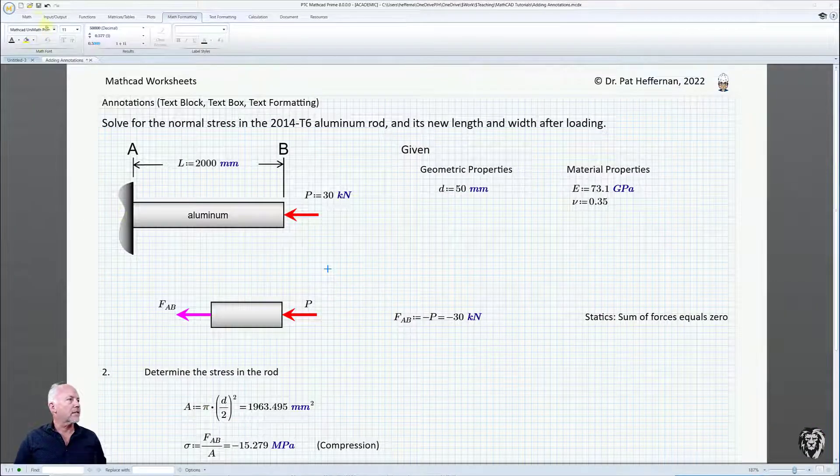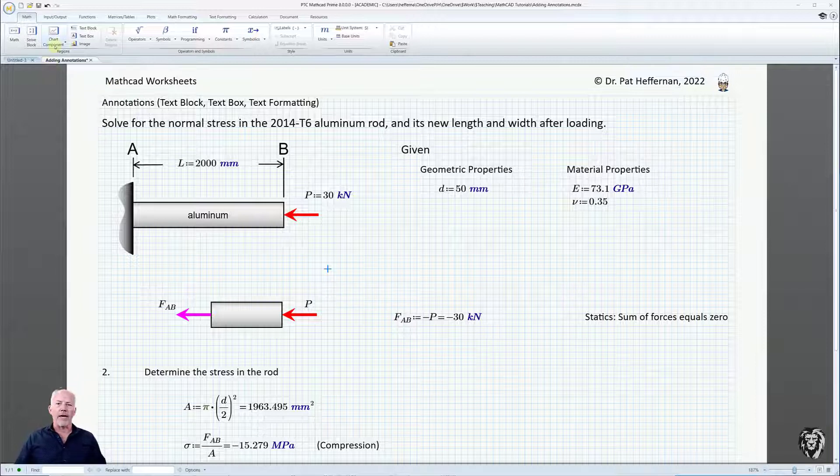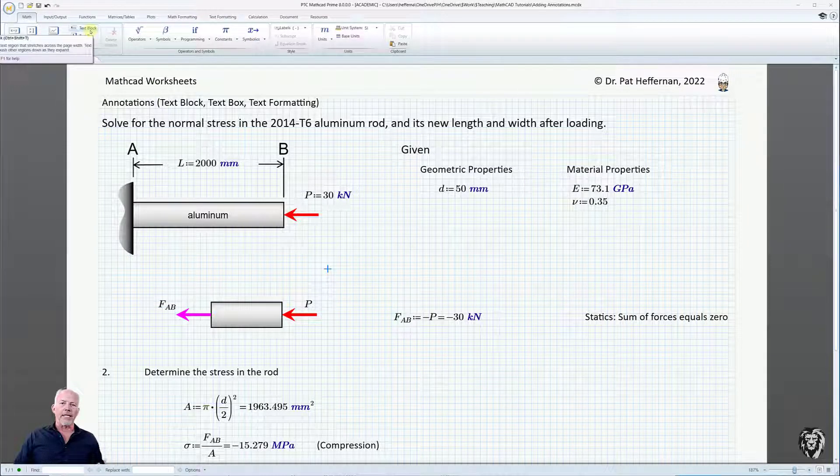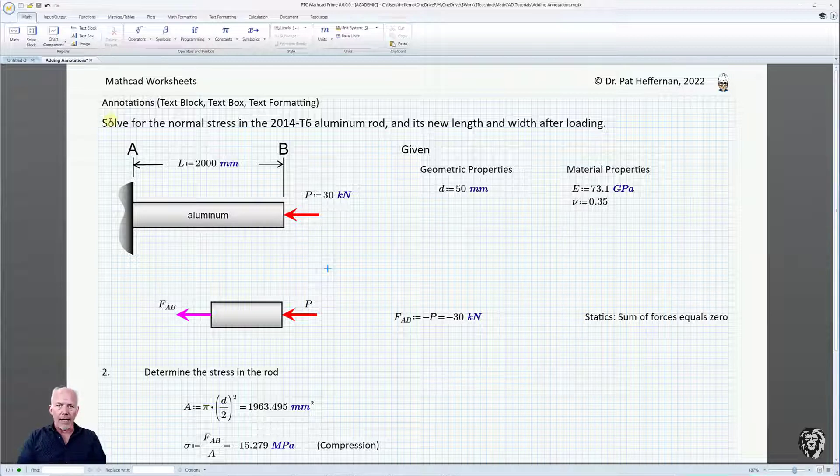So there's two different kinds of text annotations that you can do in MathCad and the first one is a text block and the next one is a text box and really they're only different in that one is full width and everything belongs to that block and the other one is just basically a text box which you can move around and put anywhere.